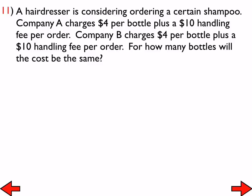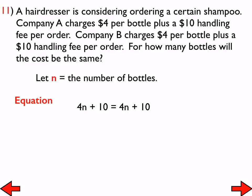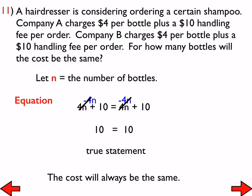For number 11, we set up a similar equation and solve. When asked for one possible answer, a student said three — but any number works: three, five, a billion, even pi. The variables cancel and we end up with a true statement, giving infinitely many solutions. The answer to the question is: the cost will always be the same, no matter the number of bottles. That wraps up today's lesson.